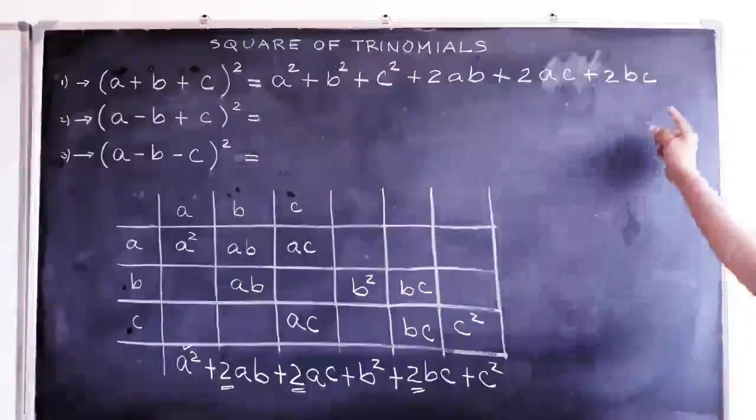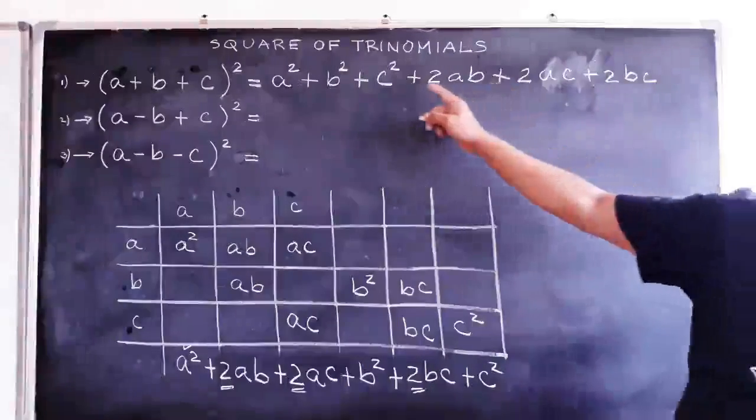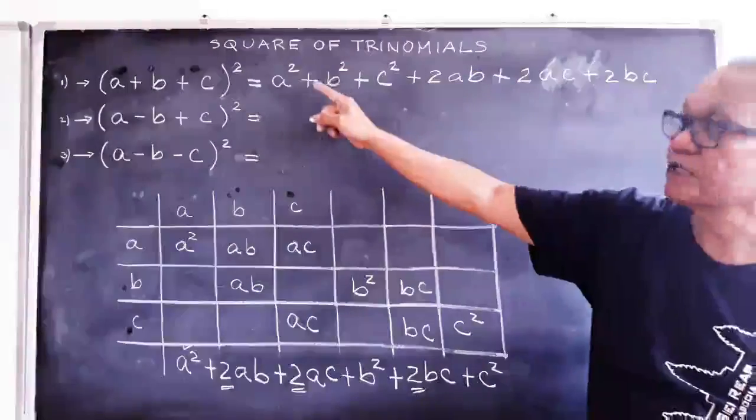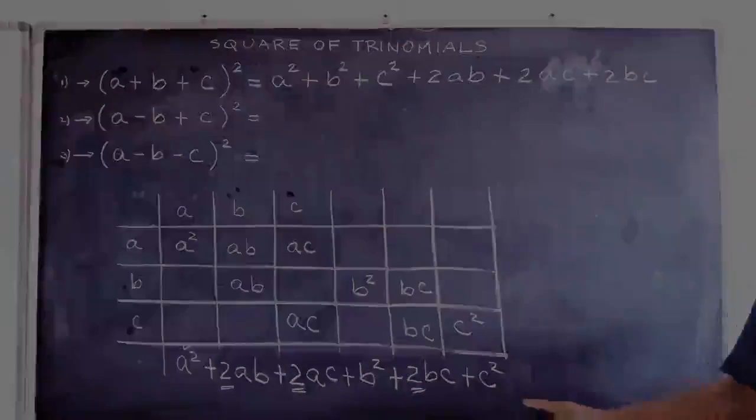So how many terms do we have? One, two, three, four, five, six. And they are all the same as what we derived using the box method.